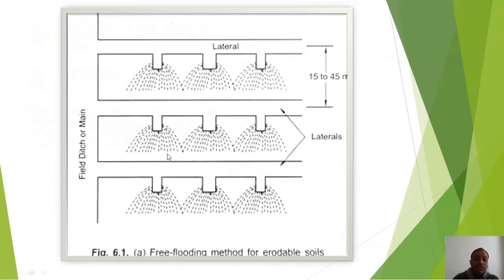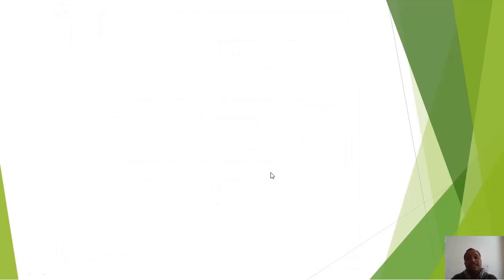Subsurface irrigation also uses a free flooding method. Lateral drains or cross drains — filled ditches or main drains — are used. The center-to-center distance between two lateral drains is 15 to 45 meters. If you like the video, please share and subscribe the channel for more fruitful and knowledgeable videos.